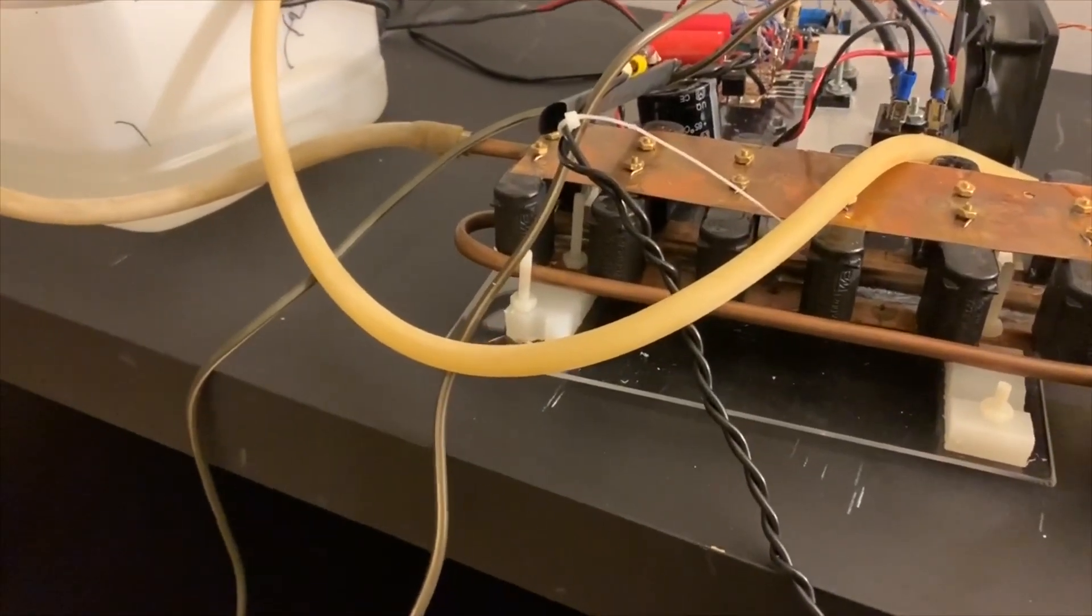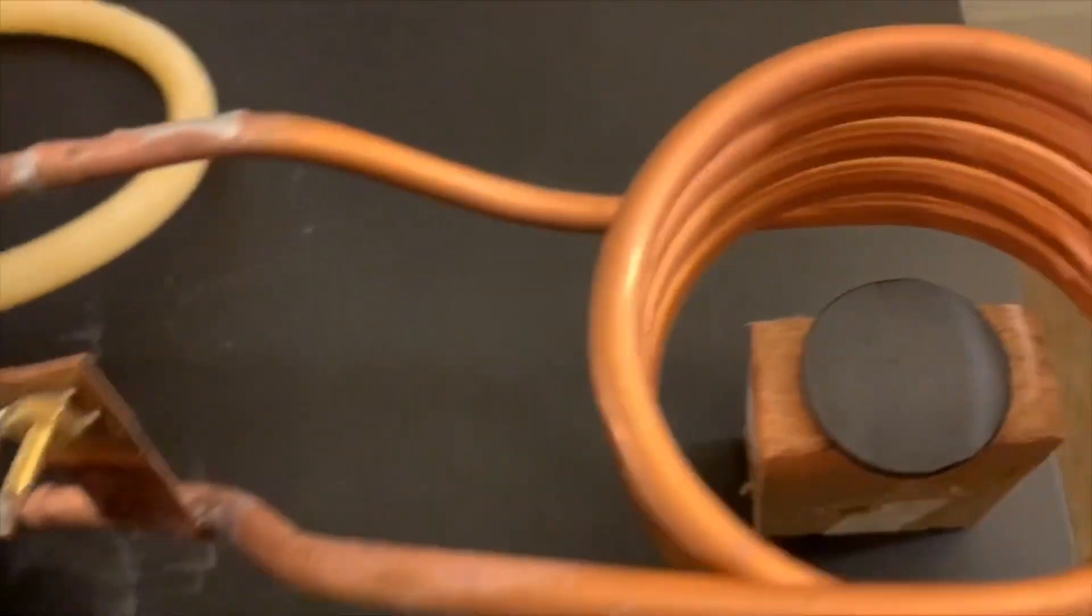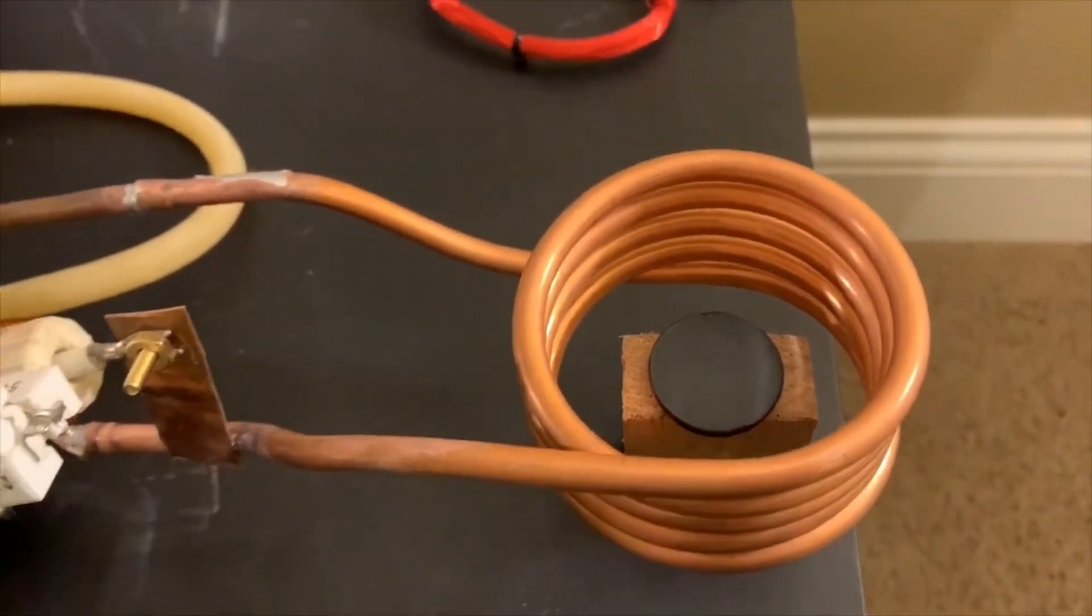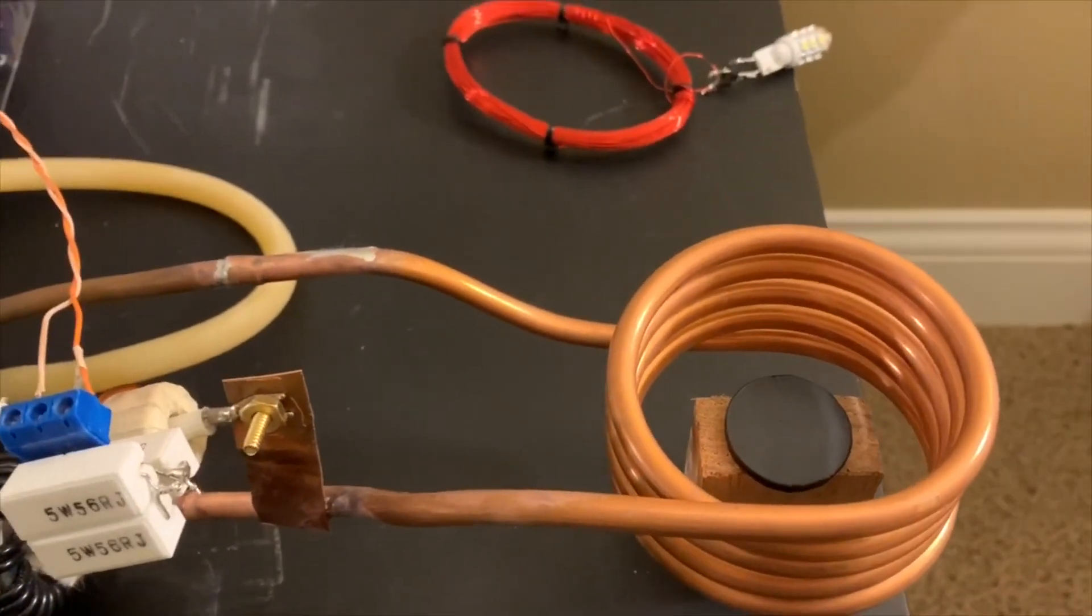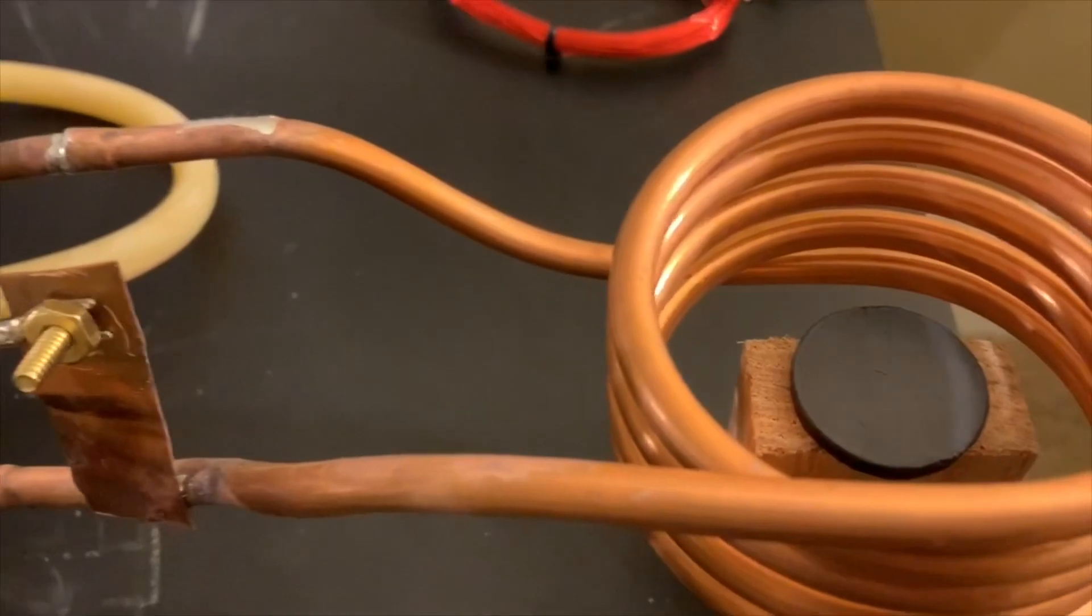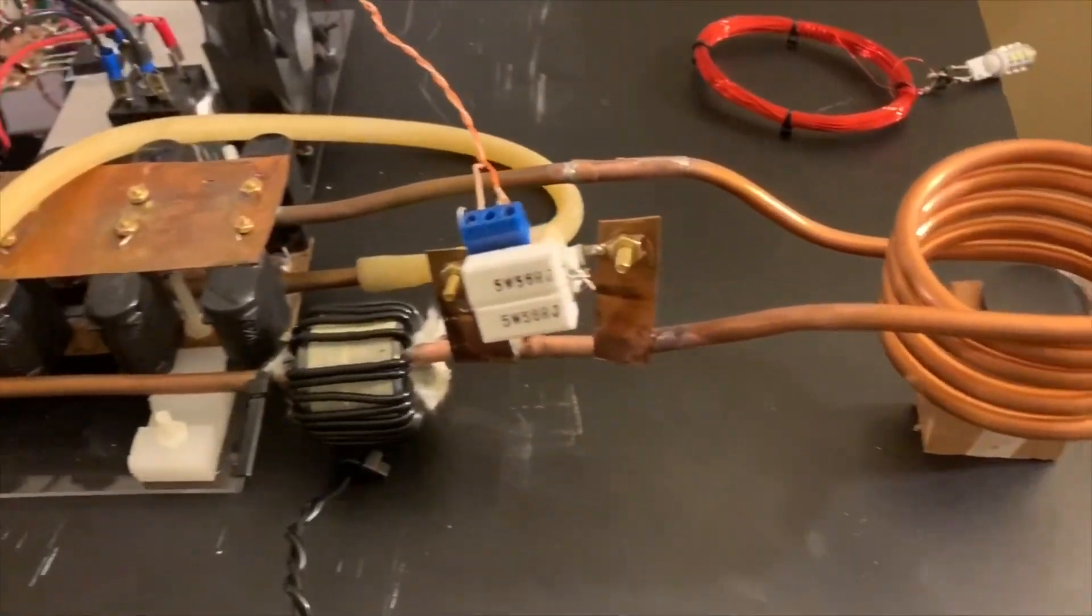These are so-called high temperature superconductors because you can get them to zero resistance at the temperatures of liquid nitrogen or even higher. In this experiment we're going to see what happens when we cool one of these down with liquid nitrogen and then place it in the induction heater.